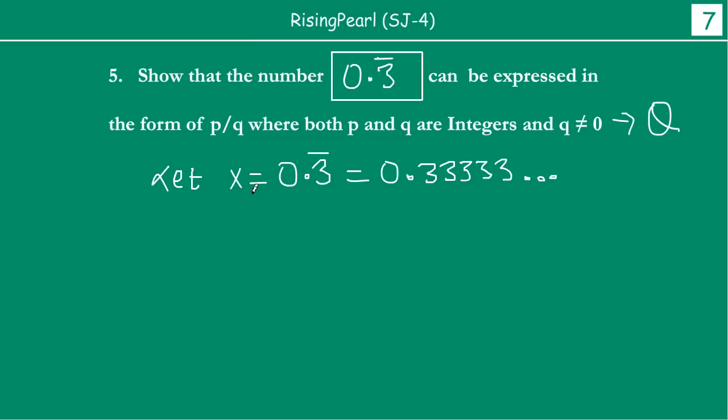Now, the technique that we use here is: however many digits repeat, we multiply this equation by 10 to the power that much on both sides. So in this case, what we will do, we will say, okay, multiplying both sides by 10 to the power 1. So 10 to the power 1, because here we have basically one recurring digit, right? Which is 3. So the number of recurring digits here is one, which is 3. So we multiply both sides by 10 to the power 1. If we had two or three recurring digits, we would have multiplied by 10 to the power 2 or 3.